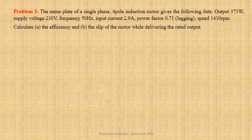The nameplate of a single phase 4-pole induction motor gives the following data: output 373 watts, supply voltage 230 volts, frequency 50 hertz, input current 2.9 ampere, power factor 0.71 lagging, speed 1410 revolutions per minute. We have to calculate the efficiency and the slip of the motor while delivering the rated output.